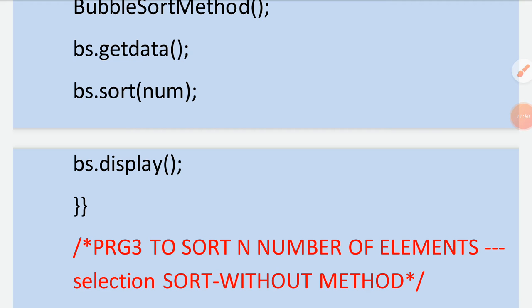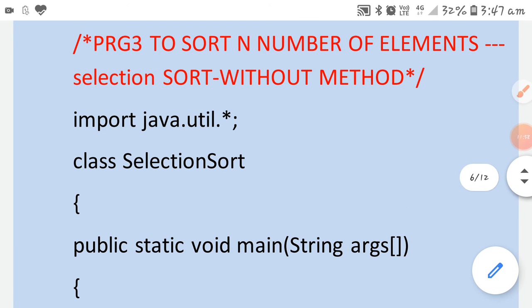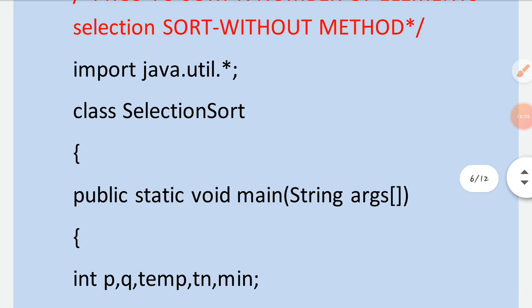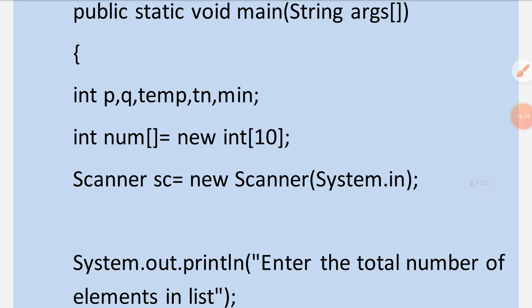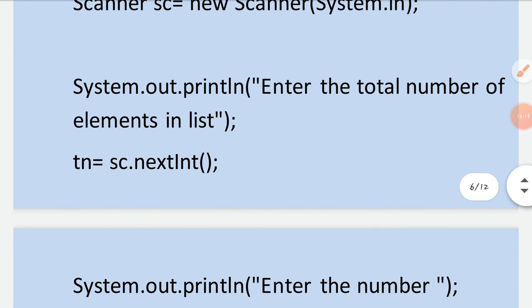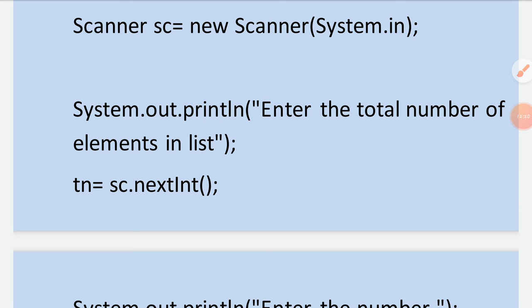Next is sorting using the selection sort technique. There are two sorting techniques: bubble sort and selection sort. This is program three — arranging elements using the selection sort technique, without methods first. We import the scanner utility package, name the class SelectionSort, write public static void main, declare variables and the array, create the Scanner object, and enter the total number of elements.